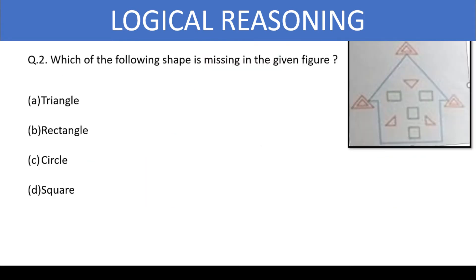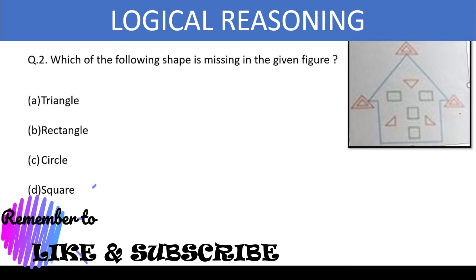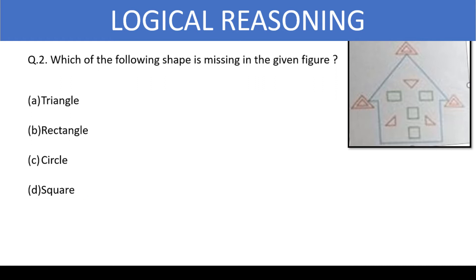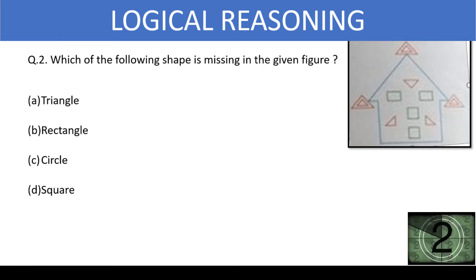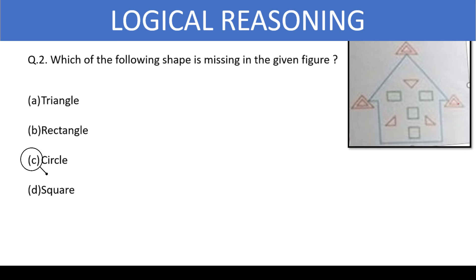Next question: which of the following shapes is missing in the given figure? Choose your right answer from the options. The right answer for this is option C, circle.